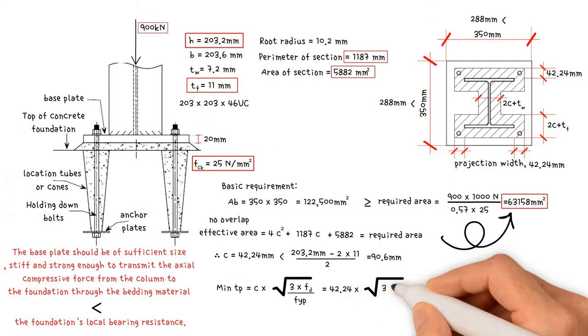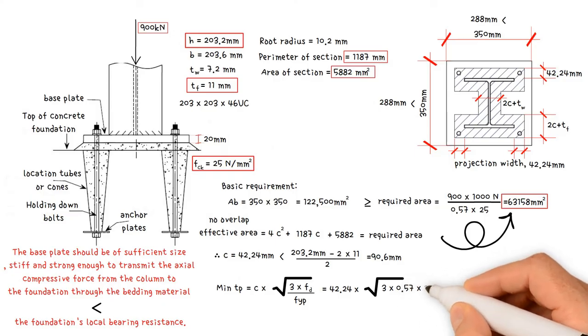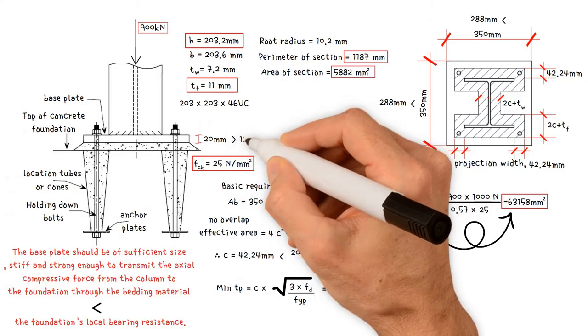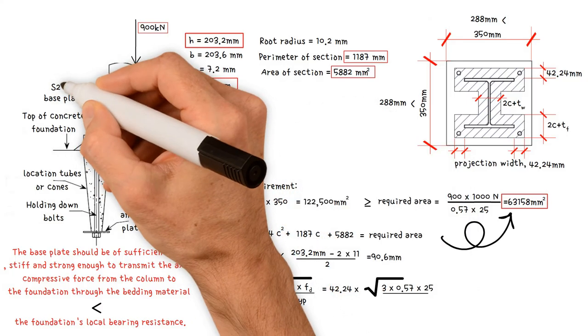3 times design compressive strength of concrete 0.57 times 25 divided by, as 20 millimeters plate thickness is more than 16 millimeters, for grade S 275, the yield strength of plate is 265 newton per millimeter squared. This gives us a value of 16.97 millimeters. Therefore, using 20 millimeters plate thickness is deemed satisfactory.